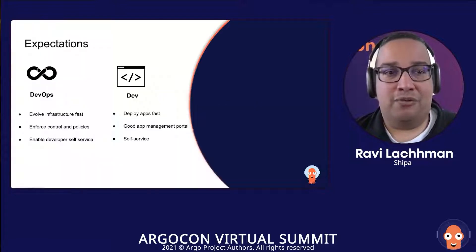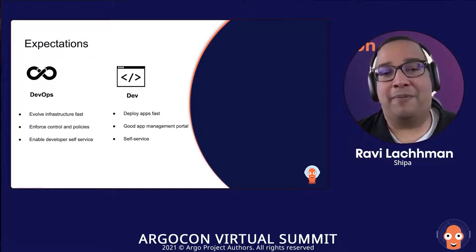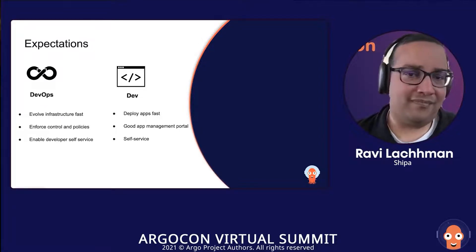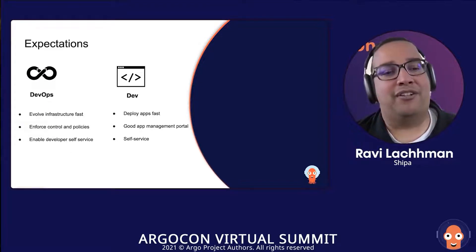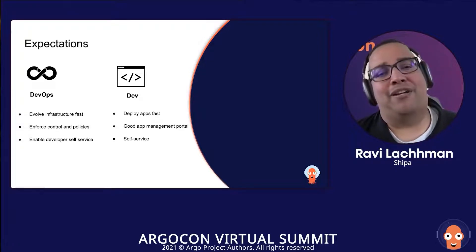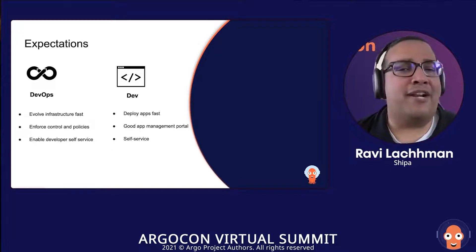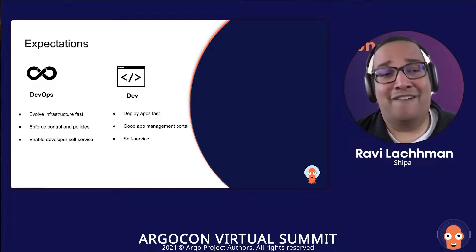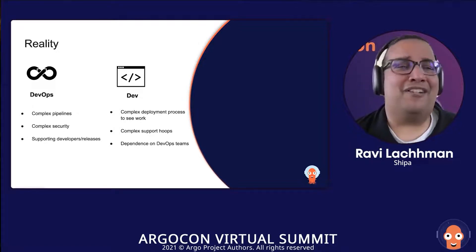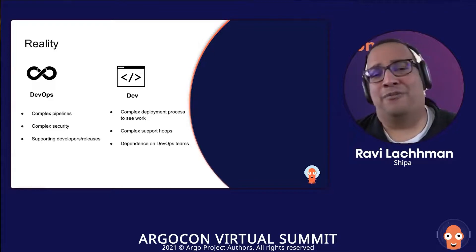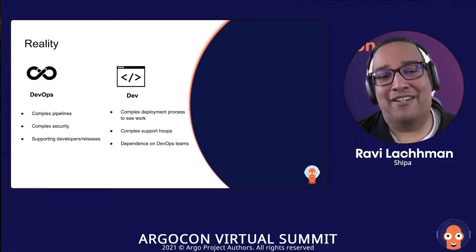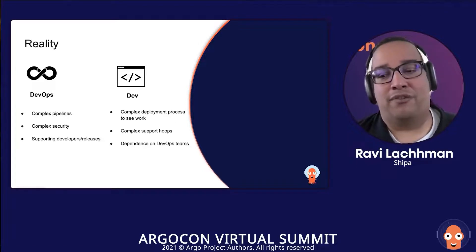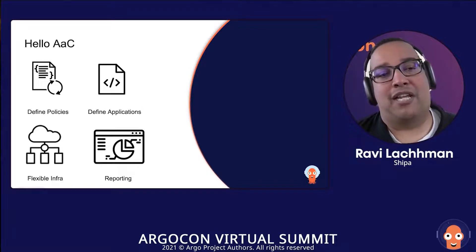Another concept I want to introduce — looking at your teams, maybe you're on a DevOps team or a dev team, there are different expectations. A developer might expect the DevOps team to evolve infrastructure fast, make sufficient policies, and enable self-service. The DevOps side expects developers to deploy fast using their management portal. But what actually ends up happening: developers feel DevOps created overly complex pipelines and security postures, while DevOps sees an unexpected dependency from developers needing support. Complexity leads to burden.